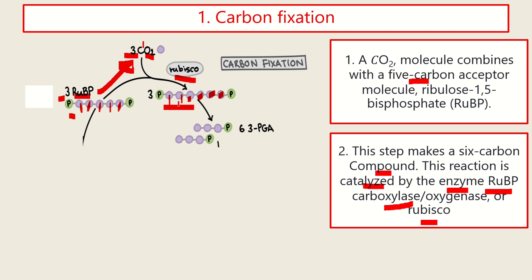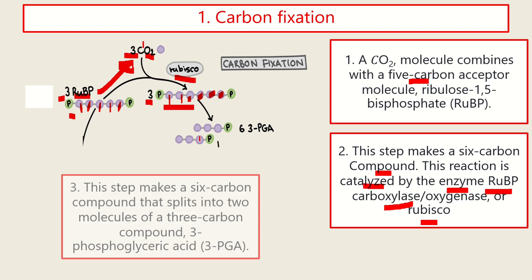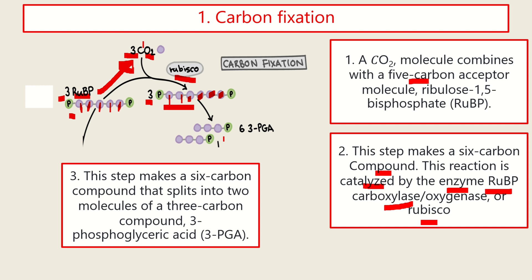Total, we have 3 molecules of 6-carbon compound. And this 6-carbon compound splits into 2 molecules of a 3-carbon compound named phosphoglyceric acid or 3-PGA. So a total of 6 molecules of 3-PGA are formed in the carbon fixation.